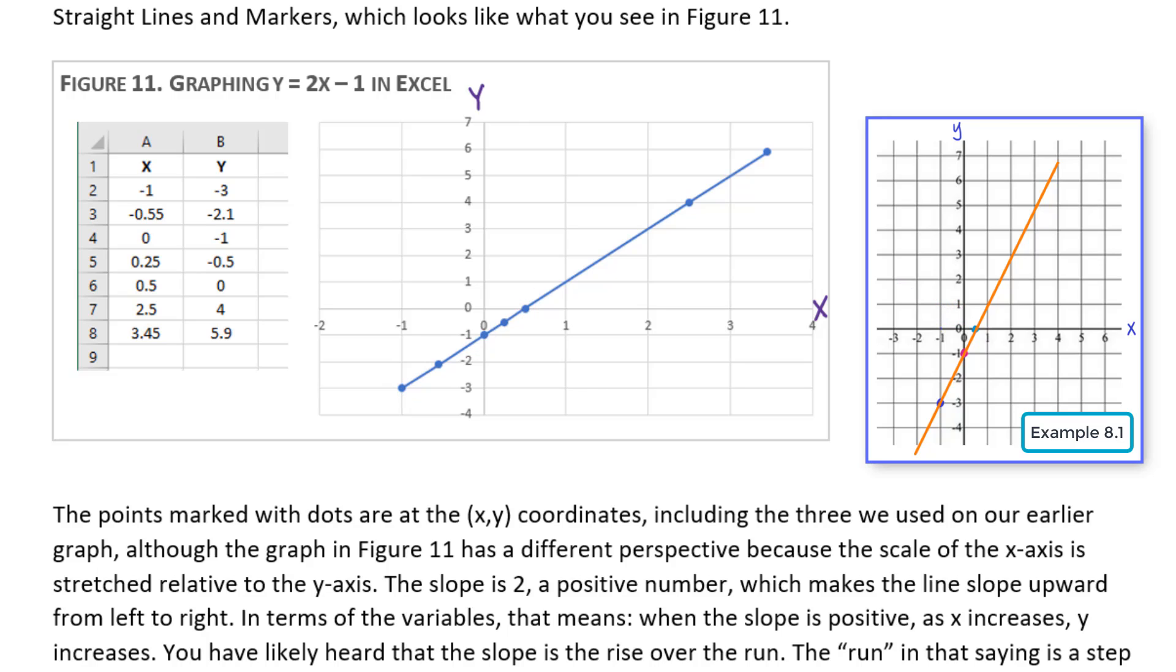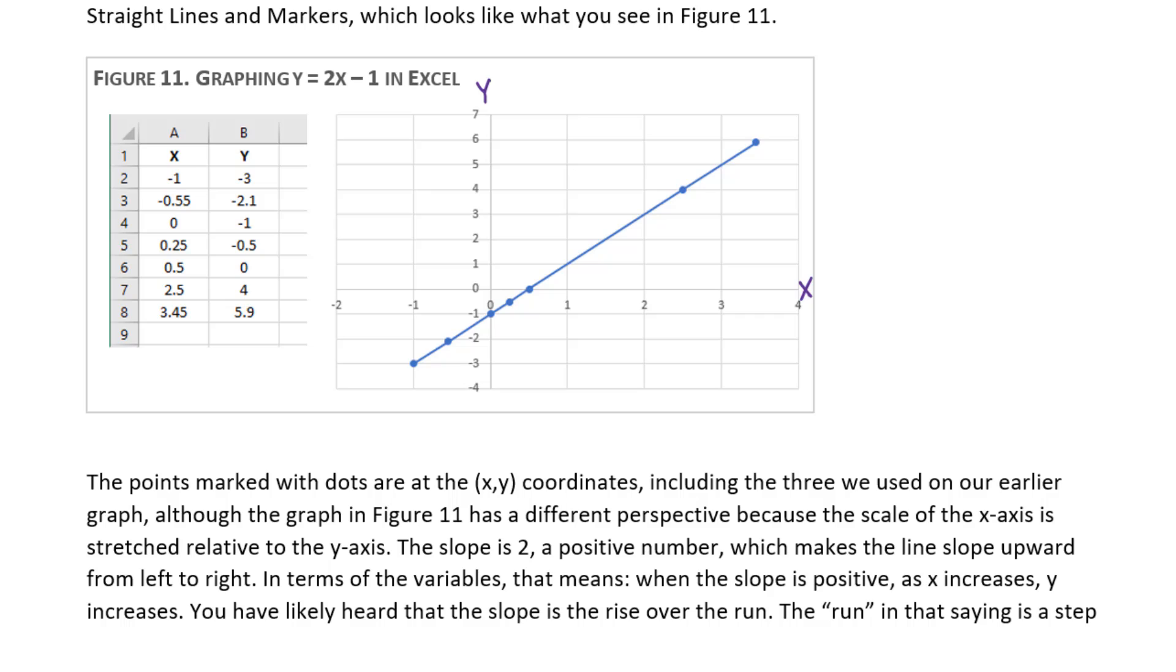The graph in Figure 11 doesn't look as steep as it did in Example 8.1, simply because the x-axis scale is stretched relative to the y-axis. The slope is 2, which is a positive number, and the significance of that is shown on this graph because this line climbs from lower left to upper right. It slopes upward from left to right. That's what a positive slope does to a line.